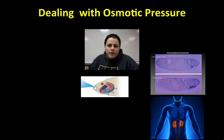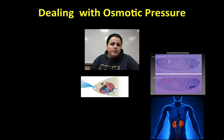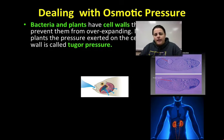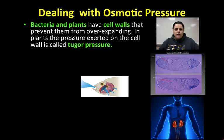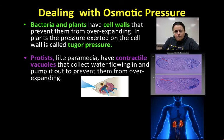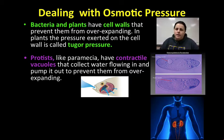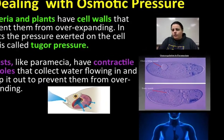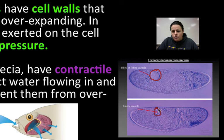Organisms have different ways to deal with osmotic pressure, as they're constantly surrounded by changing environments. Plants and bacteria have cell walls that prevent their cells from bursting as water enters — this is called turgor pressure. Certain freshwater organisms like protists, such as a paramecium, don't have a cell wall and are constantly taking water in because fresh water is hypotonic. They survive because they have special contractile vacuoles that fill up with water and then contract, squeezing out all that excess water continuously.